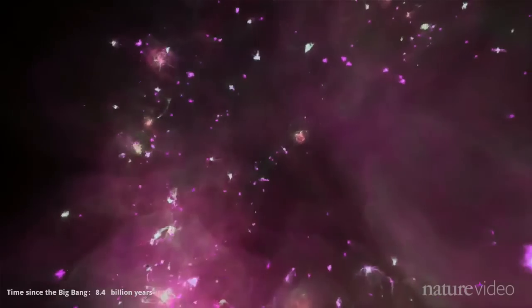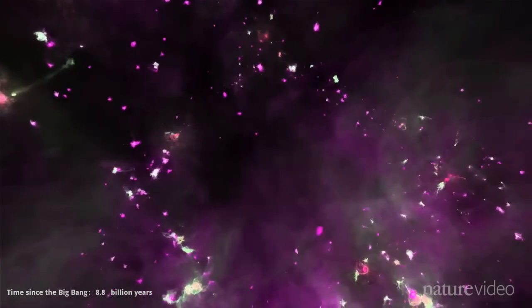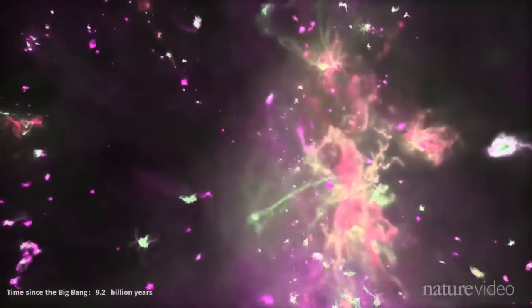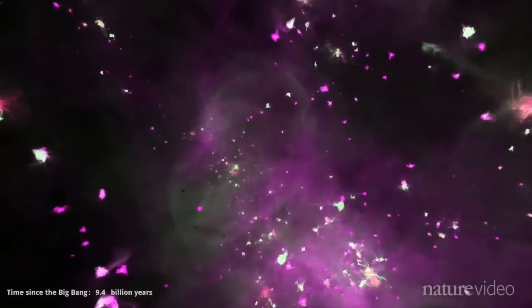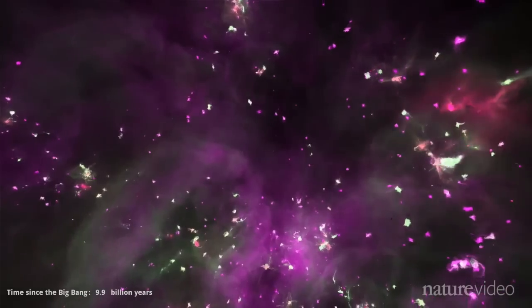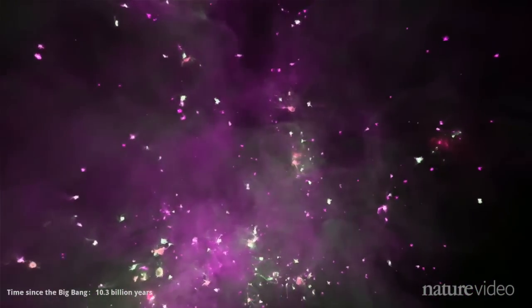The simulation also shows the distribution of different elements. The early universe was full of helium and hydrogen. As stars evolve and die in supernovae, they fuse these basic chemicals into heavier elements, such as carbon and oxygen, as well as metals. The violent bursts around black holes spread these elements across space. The pink clouds you see here.